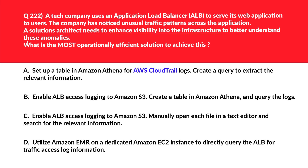Option B says enable ALB — Application Load Balancer — access logging to Amazon S3, create a table in Amazon Athena, and query the logs. This solution provides an efficient way to analyze access logs using Athena, which allows querying large datasets stored in S3 without the need for additional infrastructure. Looks good — we'll park this.